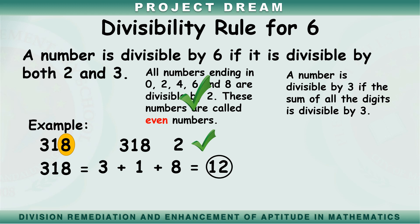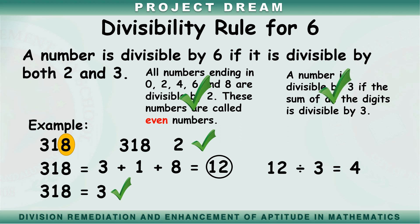The sum of the digits is 12. Is 12 divisible by 3, or can we divide 12 by 3 without remainder? Yes — 12 divided by 3 equals 4. Therefore 318 is divisible by 3. Another condition is satisfied. Since both conditions are satisfied, therefore 318 is divisible by 6.